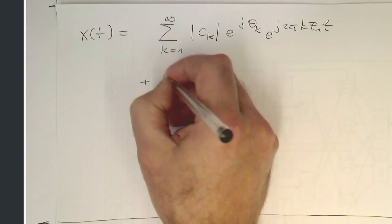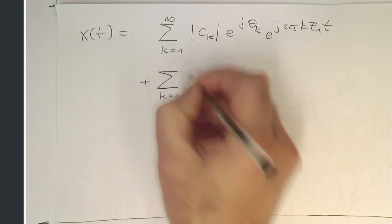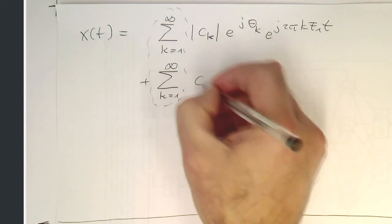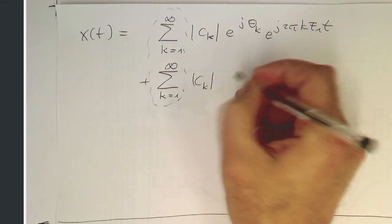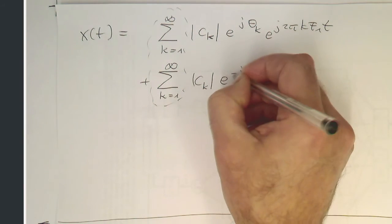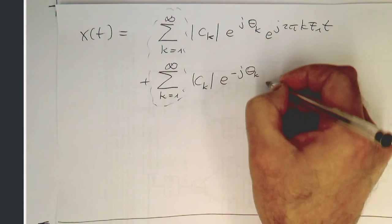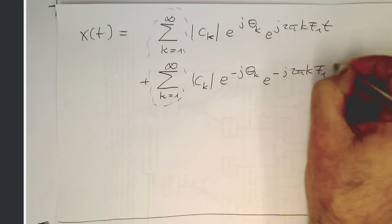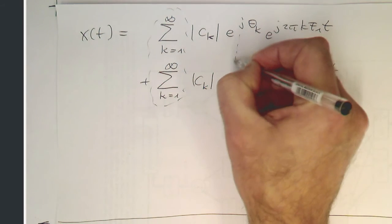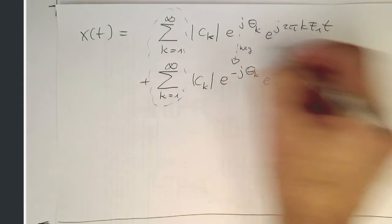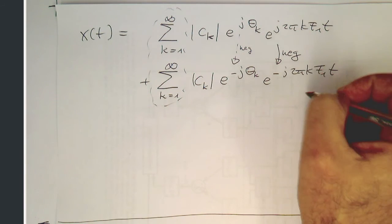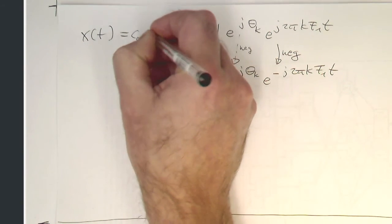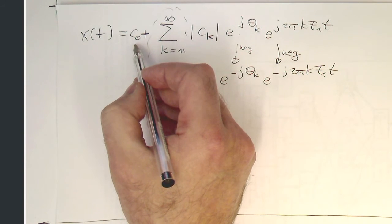And now we just add our negative part to it, but we also run this with the same index from 1 to infinity, so that they are both identical here. So again, ck, because absolute value, there's no difference. And so what we do now is we just pull the negative sign in here, so that's the trick, and we pull the negative sign also in here, so that essentially we have the same here, just with the negative sign. And what is missing out just now is our k equals 0, and we just sneak this in here with a c0, just as a constant.